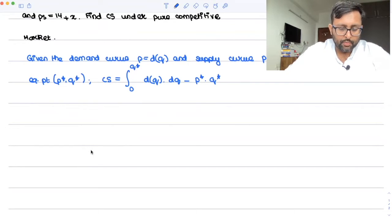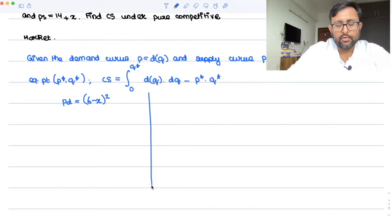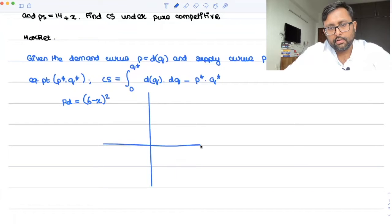Now, if you look at this problem, you are given with p equals, demand function is six minus x square. So looking at this, the standard form of the parabola, you can easily see that it is this kind of parabola, right? That is going to open upward.